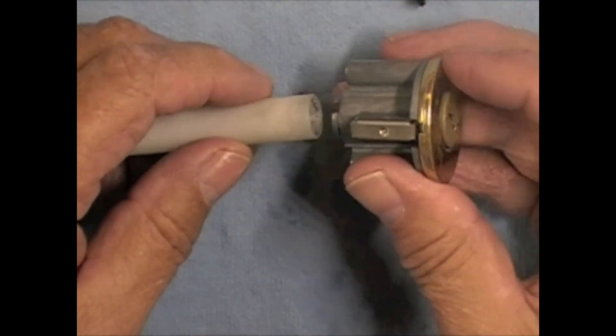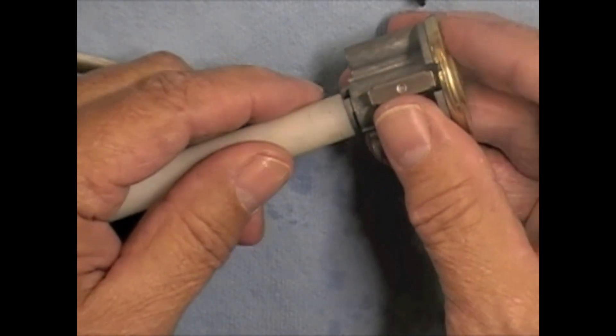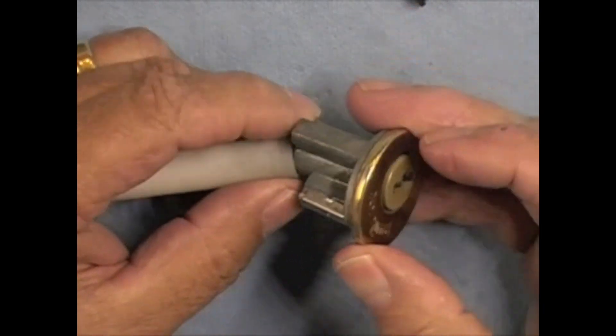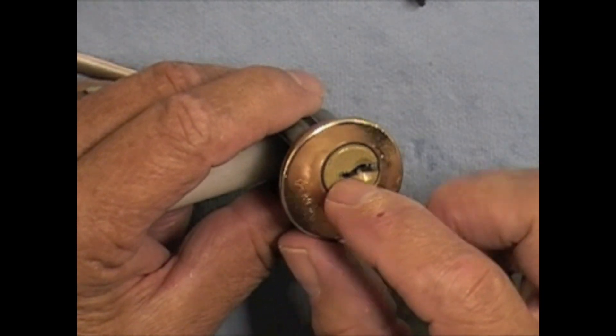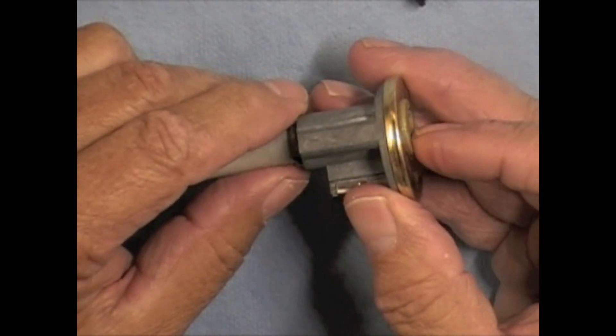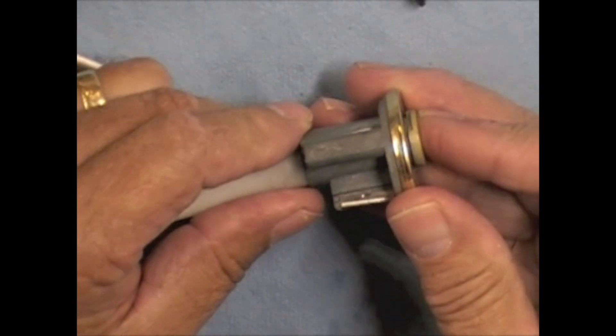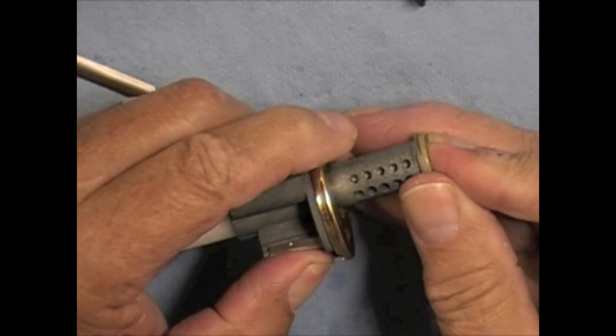Okay. So just like we learned in the previous courses, we're going to just take our follower and push our plug out. Now I'm going to look and see which direction the top of the plug is. And I'm going to hold it so that the top of the plug is up. That way I'm not going to drop out any of my pins.